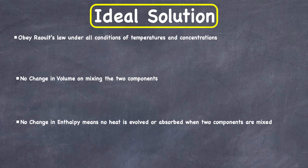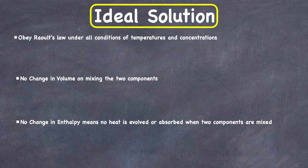Hello everyone, in this video I'm going to go over the concept of ideal solutions. By definition, an ideal solution is one in which each component obeys Raoult's law under all conditions of temperatures and concentrations. A solution that obeys Raoult's law over the entire range of concentration is known as an ideal solution. Let's say we have component A and component B.